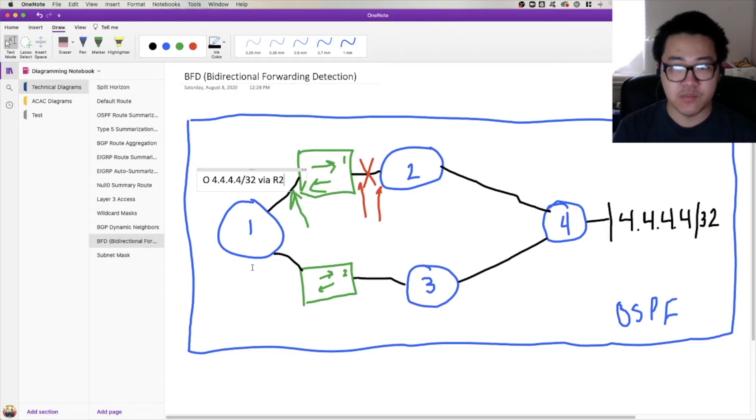BFD does something very similar. It has BFD messages that go between the two routers as keep-alives in a sense. Now you might be wondering, oh well, why are you using BFD in that case? Because it's doing the exact same thing as OSPF, but much, much faster.